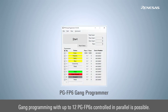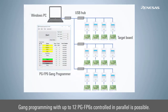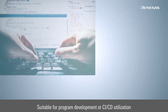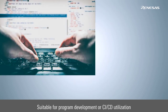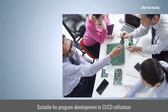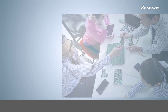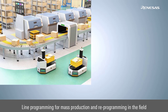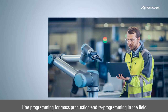The Renesas Flash Programmer is suitable for the development phase. Detailed control is possible from the command line, which can be used effectively for continuous automated testing. The PGFP6 is suitable for programming on mass production lines. It is also easy to use for reprogramming in the market after product shipment.